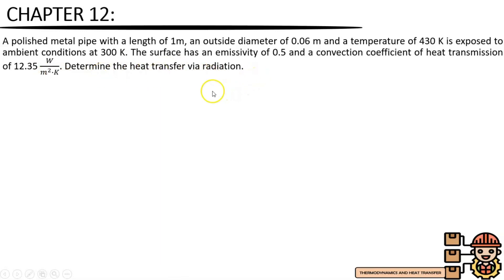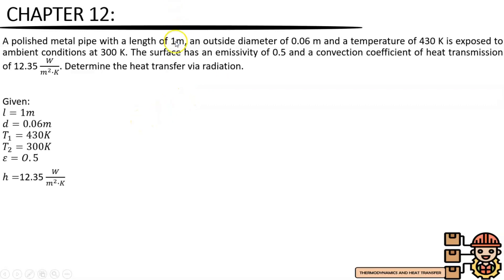So here in our problem, we are asked to determine the heat transfer via radiation. But before that, we need to identify first what are the given values. We have: length equals 1 meter, diameter equals 0.06 meter, temperature T1 equals 430 Kelvin, ambient temperature T2 equals 300 Kelvin, emissivity equals 0.5, and a convection coefficient of heat transmission equals 12.35 watts per square meter Kelvin. So now we can proceed to our solution.